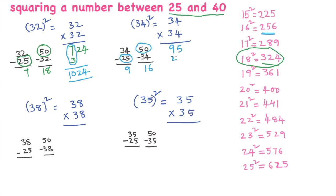As 256 is a 3 digit number, you write 2 here and 56. Add these two numbers: 9 plus 2 is 11, 1156. 34 square is 1156. 38 square: 38 minus 25 is 13.